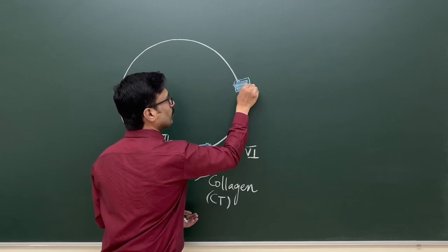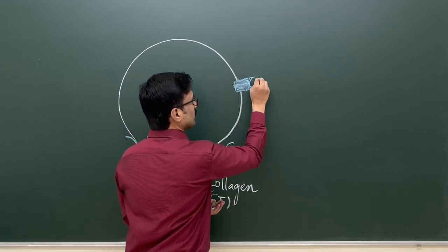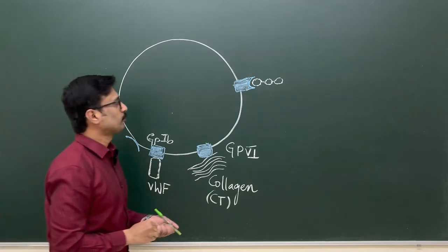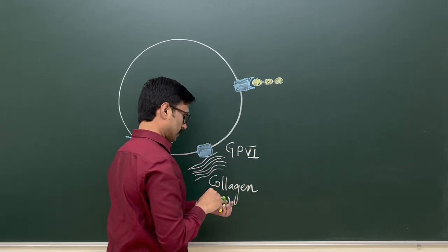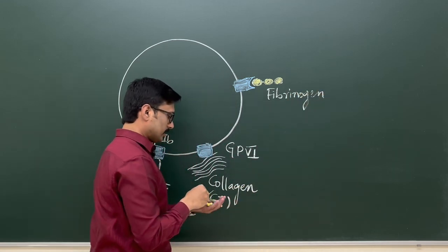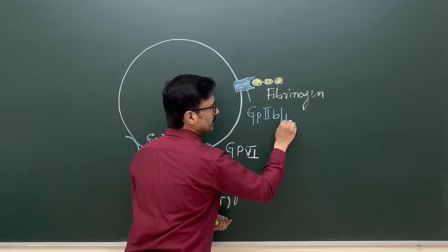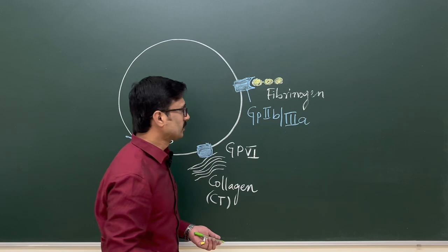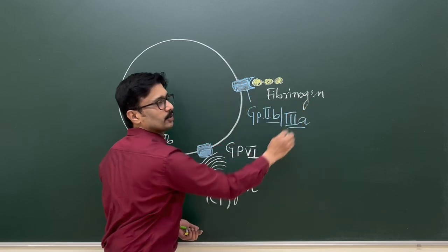There is one more glycoprotein receptor that can bind to fibrinogen. This glycoprotein receptor is the GP 2b/3a dimer — it is a dimer containing two protein subunits, 2b connected to 3a, forming a receptor that binds to fibrinogen.